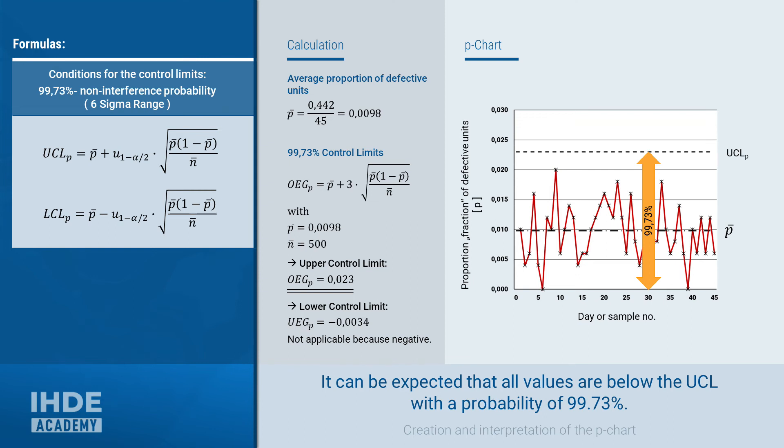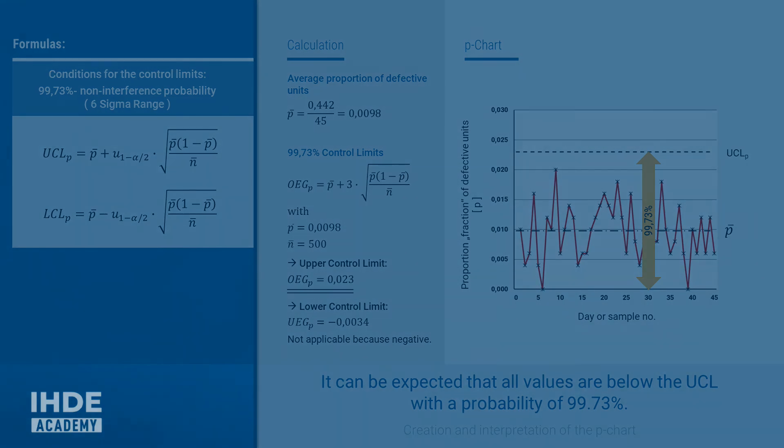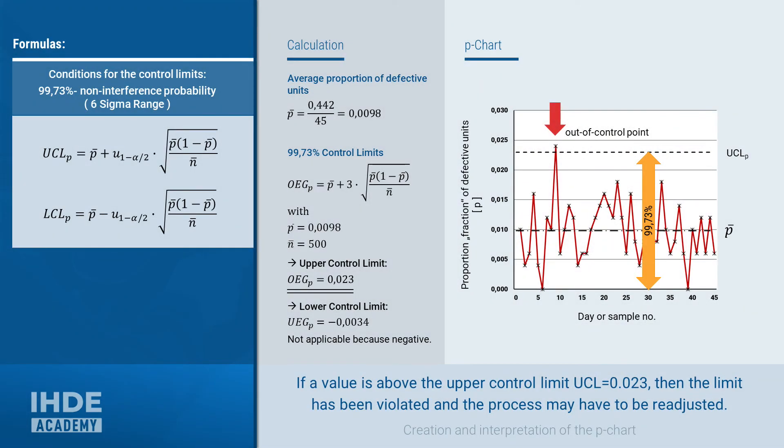The red value curve shows the data on the basis of which we carried out our calculations. It is therefore to be expected that all values will be below the upper control limit with the probability of 99.73%. The probability that one of the values is above the control limit is less than 0.27%. If such a rare event occurs, it is an indication that the process is no longer under control. The cause must then be determined and the process readjusted if necessary.